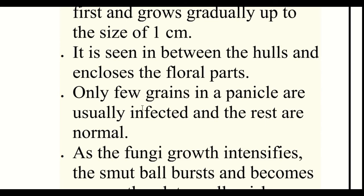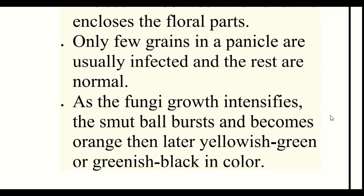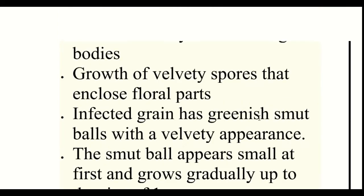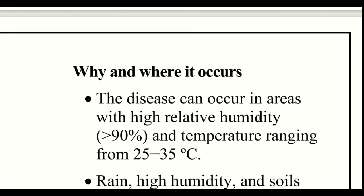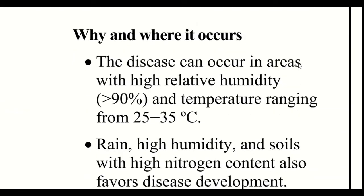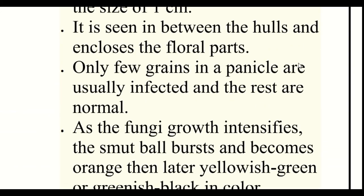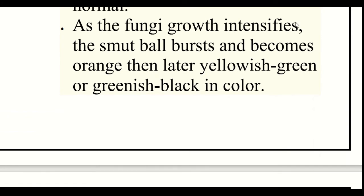Only a few grains in a panicle are usually infected and the rest are normal. As the fungi growth intensifies, the smut ball bursts and becomes orange, then later yellowish-green or greenish-black in color. Ustilaginoidea virens is a fungus causing this disease.